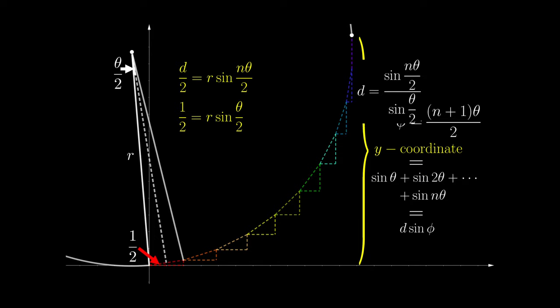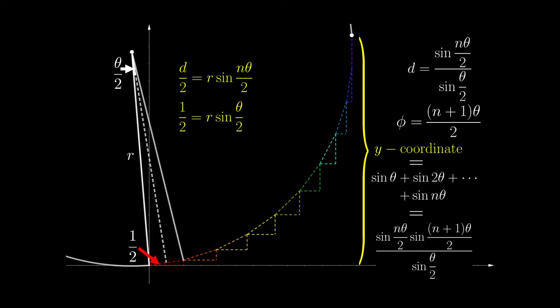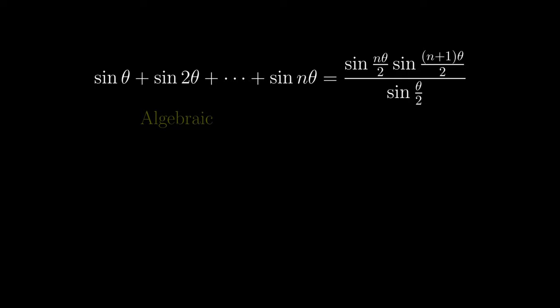So now that we have d and φ, we can finally substitute it back to this alternative way of obtaining the y coordinate of the white dot, and we get this formula that we have seen before using algebraic derivation.